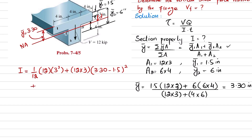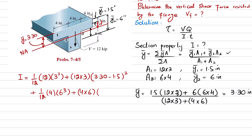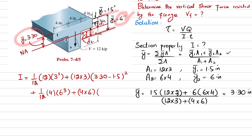For the second member (web): I2 equals (1/12)(4)(6³) plus (4 times 6) times (6 minus 3.30) squared. D2 is the distance from the neutral axis to the mid of the second section, obtained by subtracting 3.30 from 6. The total moment of inertia I comes out to be 390.60 in⁴.